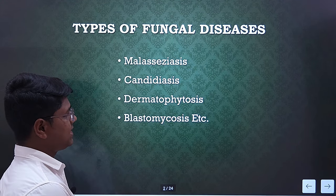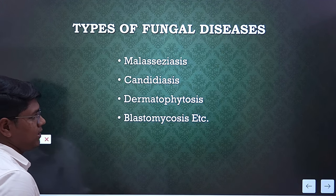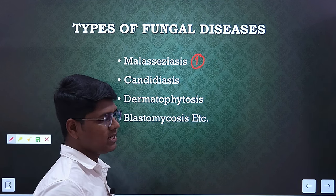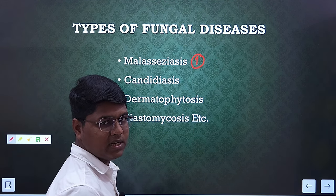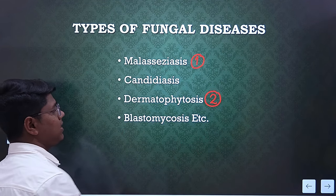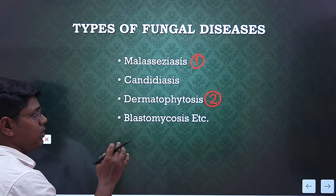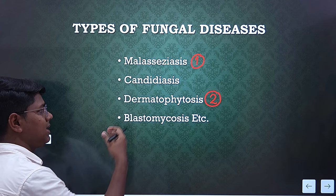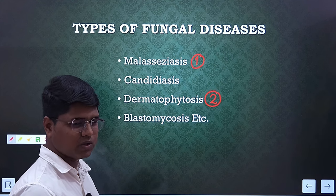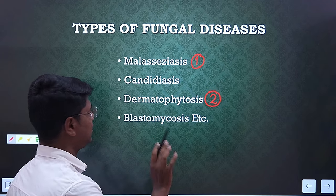So, types of fungal disease — there are many types, but the most common are four. Among these, the top two are Malassezia, which is ranked number one, and second is dermatophytosis. These two are very, very common fungal skin dermatitis in case of pet animals, especially dogs. We will be discussing these two. Apart from that, there is candidiasis and blastomycosis. These four are the top four, and among them we will study the top two: Malassezia and dermatophytosis.